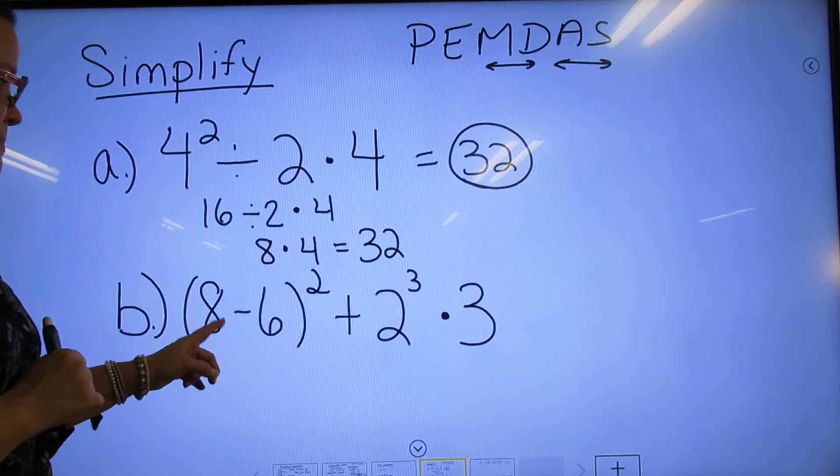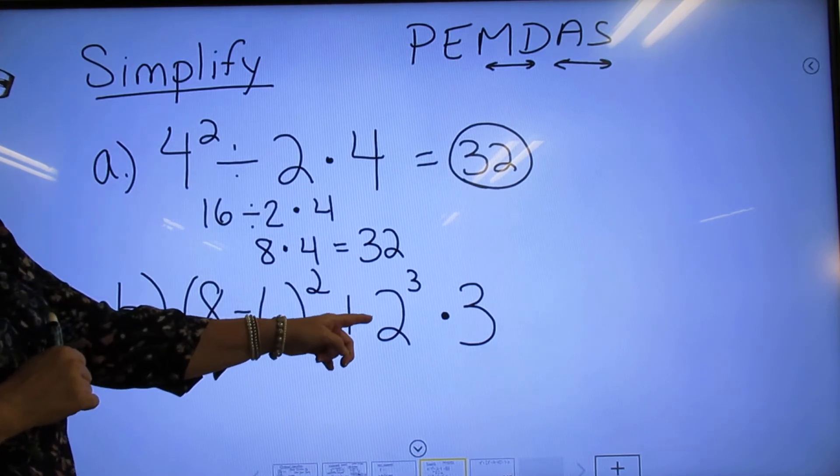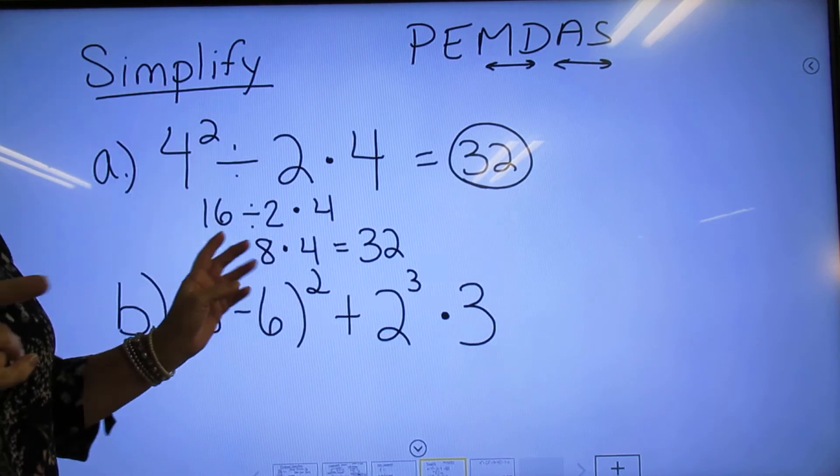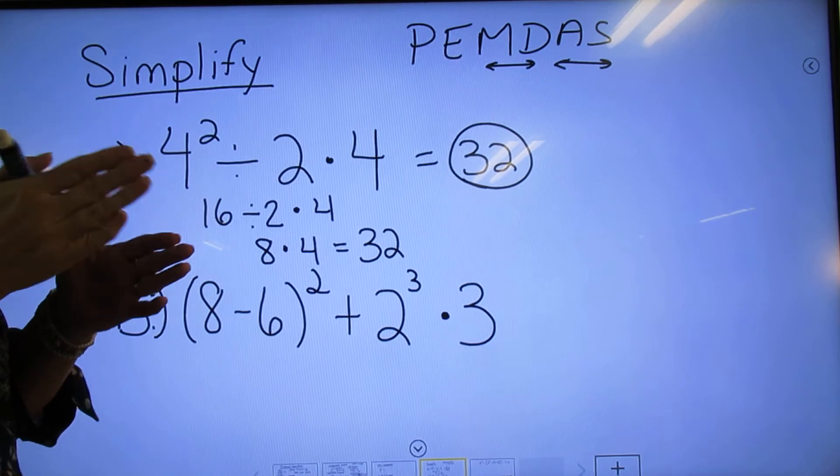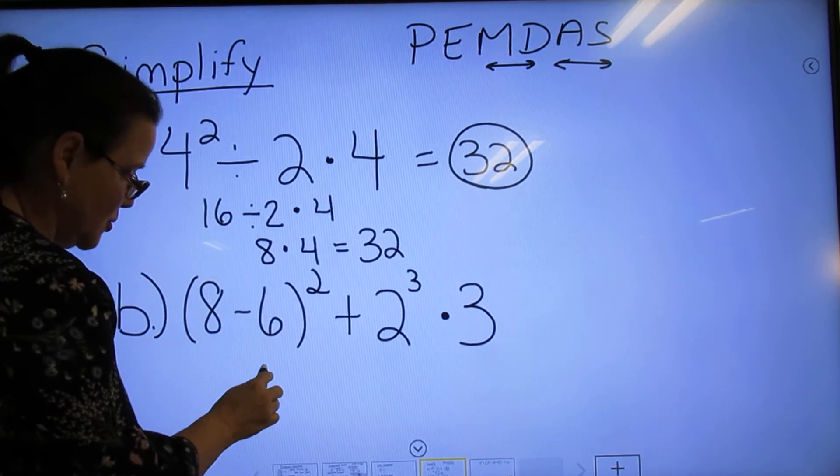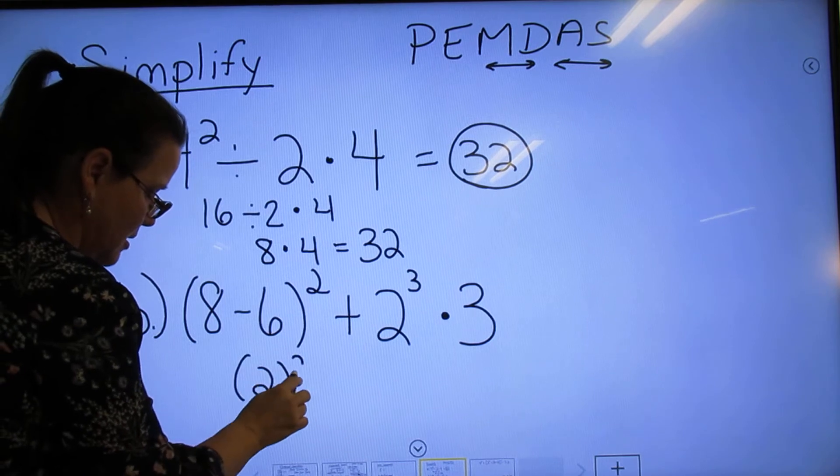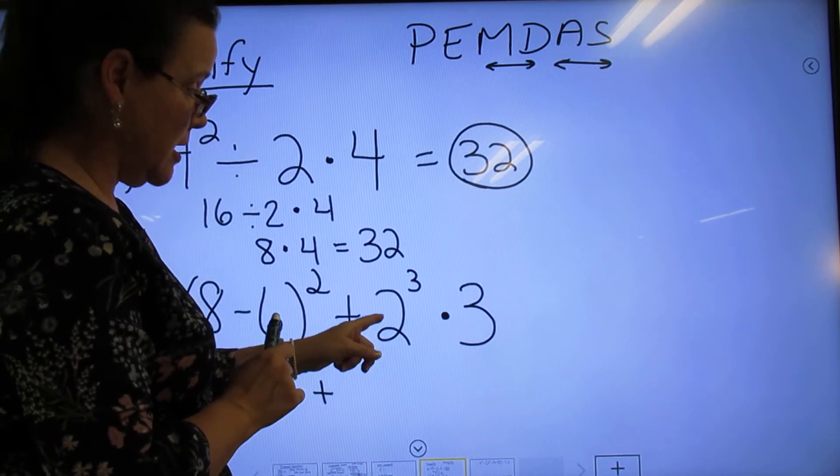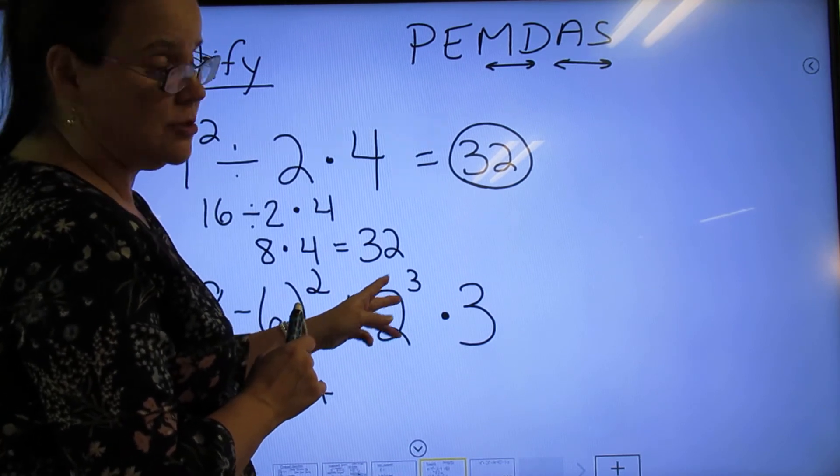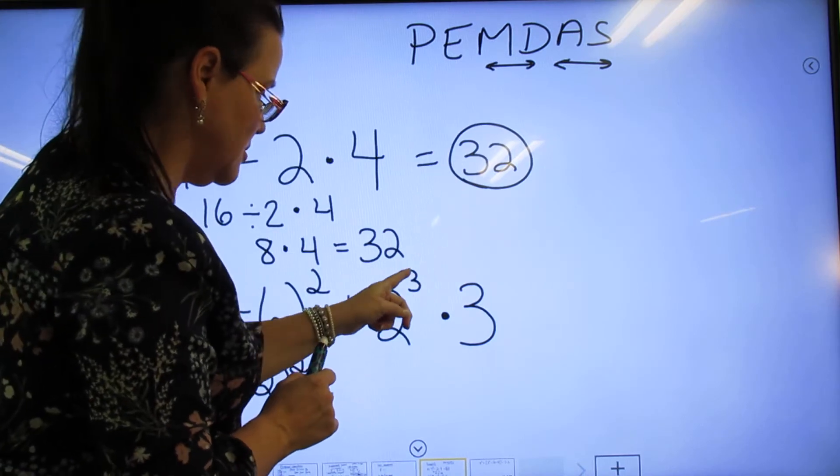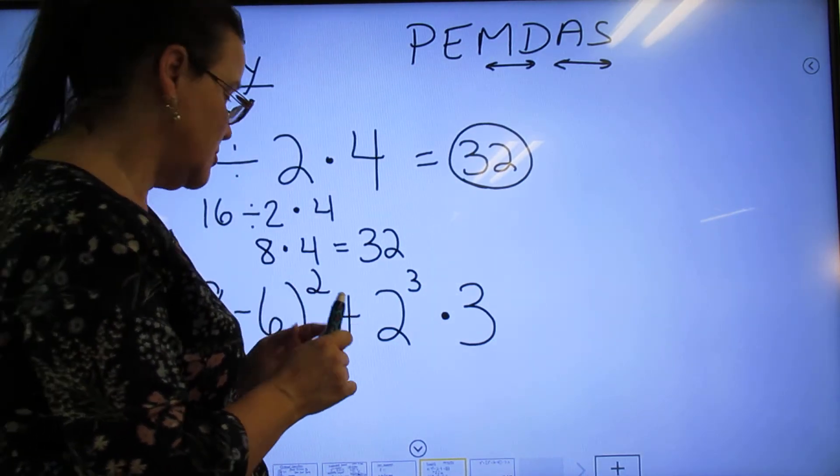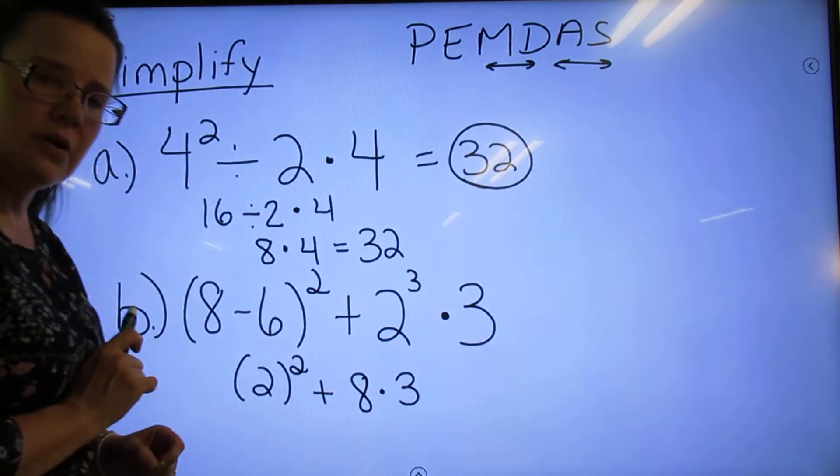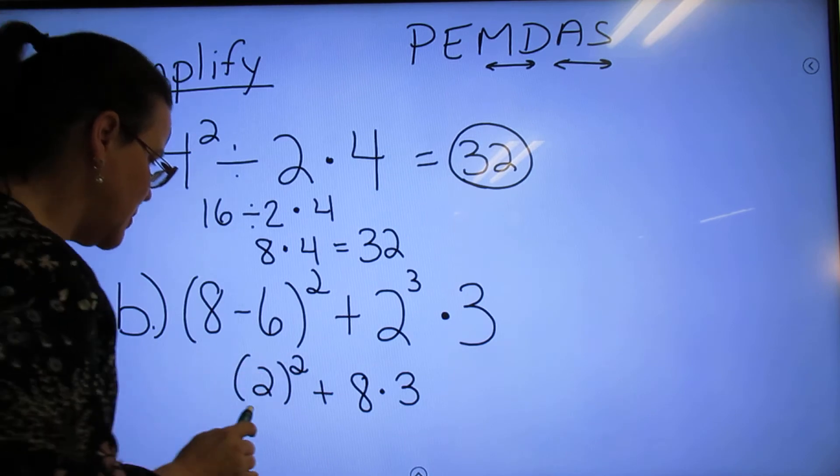The next one is 8-6²+2³×3. And you go, oh my goodness, that makes my head hurt. Well, let's take it in little baby steps. Chunk it. 8-6 is 2, and that's 2 squared because you can't forget about that, plus 2 to the third power. Well, 2 to the third power—you have to do exponents before multiplying—so 2³ is 2×2×2, which is 8, and 8×3.